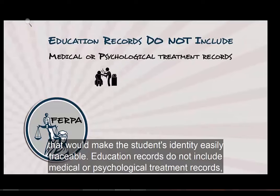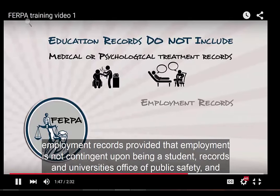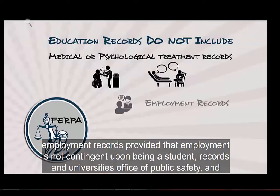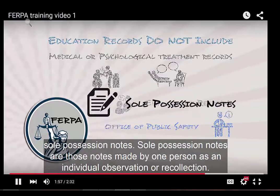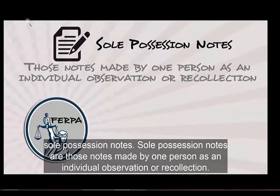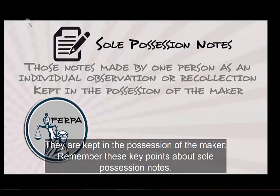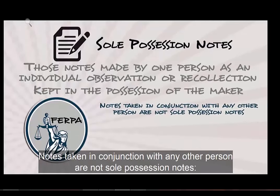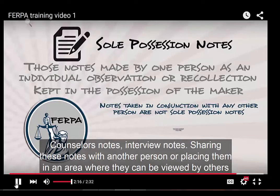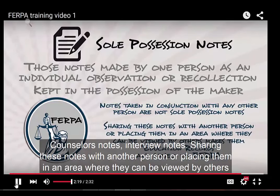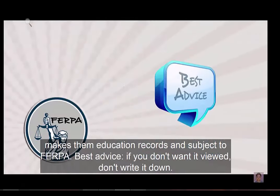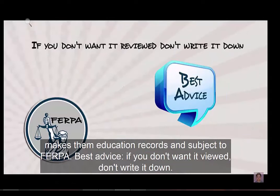Education records do not include medical or psychological treatment records, employment records provided that employment is not contingent upon being a student, records of the university's Office of Public Safety, and sole possession notes. Sole possession notes are those notes made by one person as an individual observation or recollection, kept in the possession of the maker. Notes taken in conjunction with any other person are not sole possession notes. Sharing these notes with another person or placing them where they can be viewed by others makes them education records subject to FERPA. Best advice: if you don't want it reviewed, don't write it down.